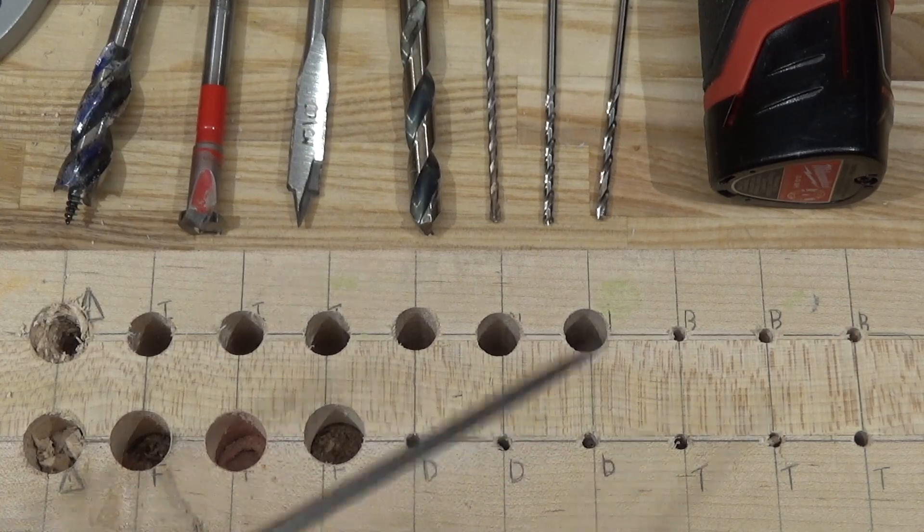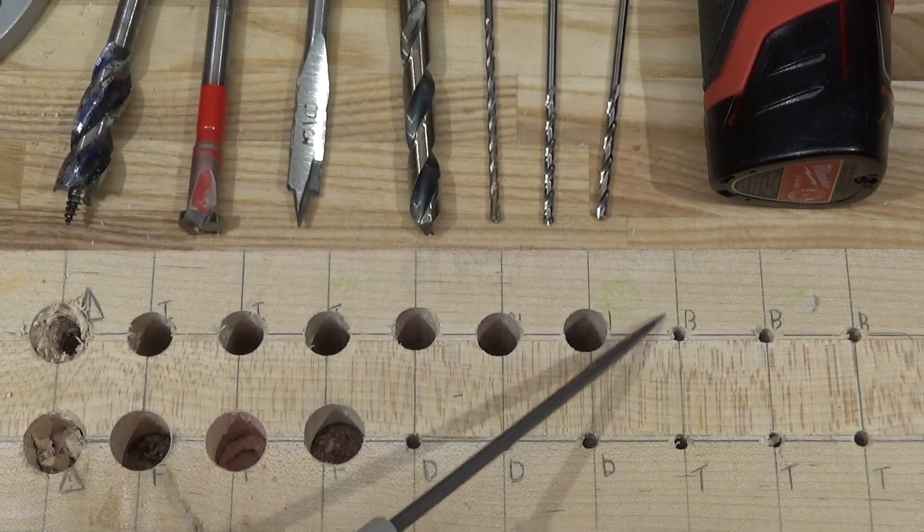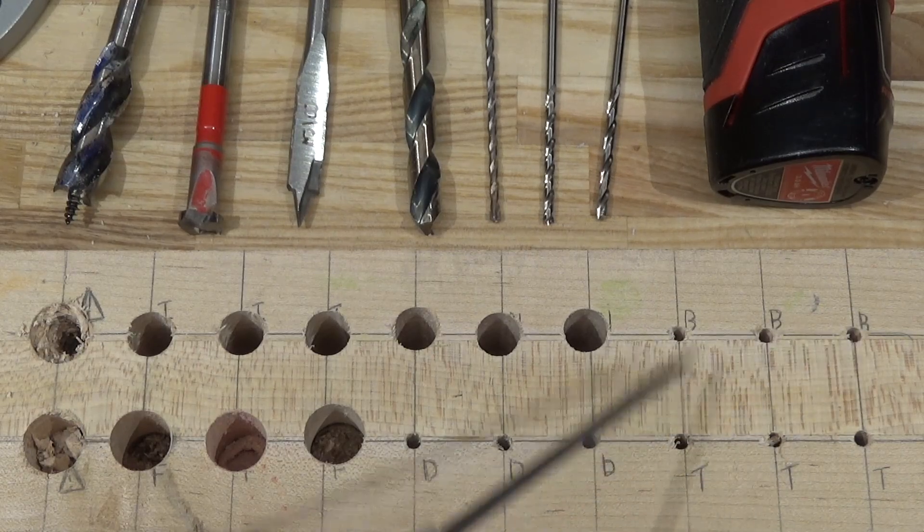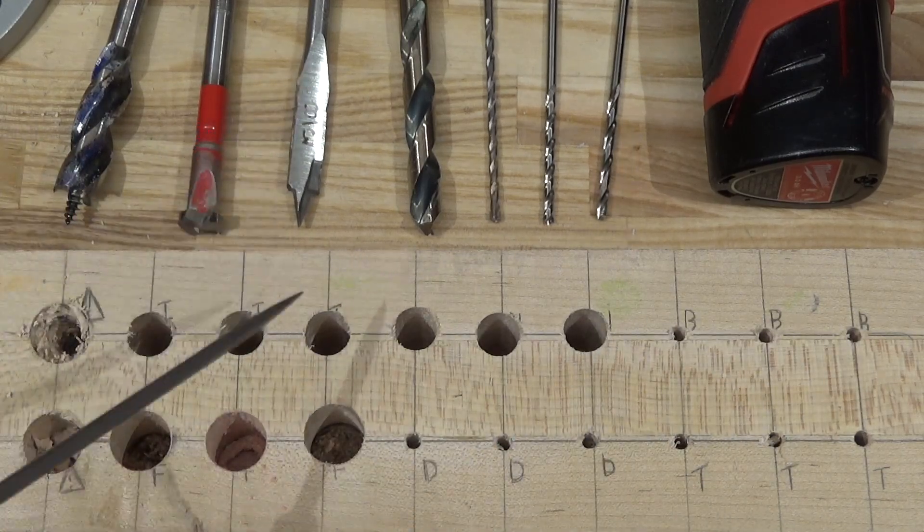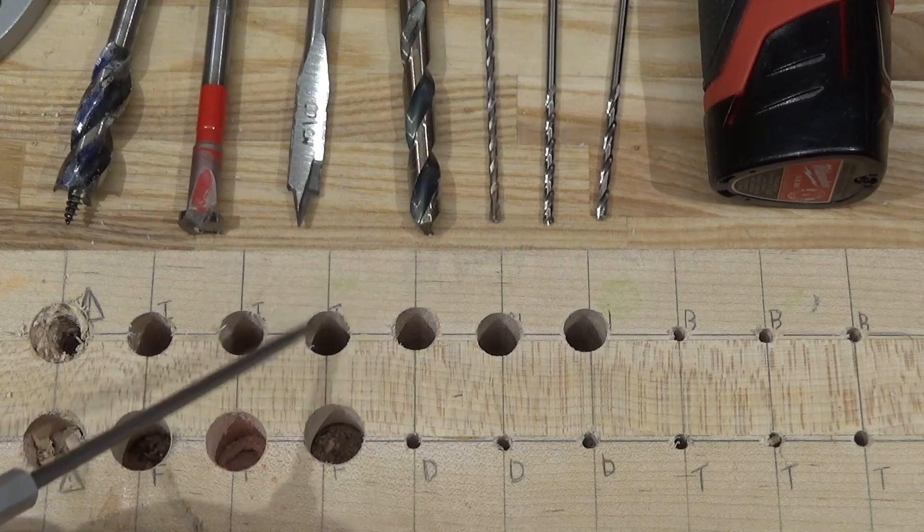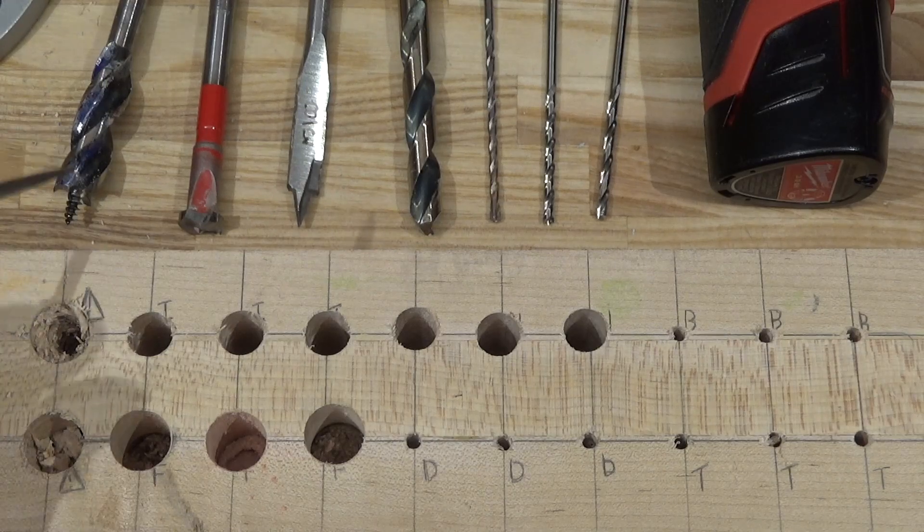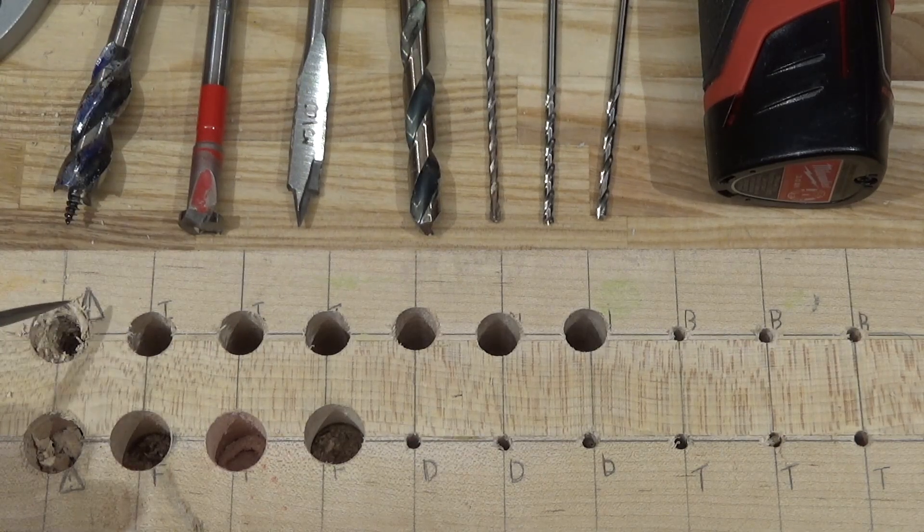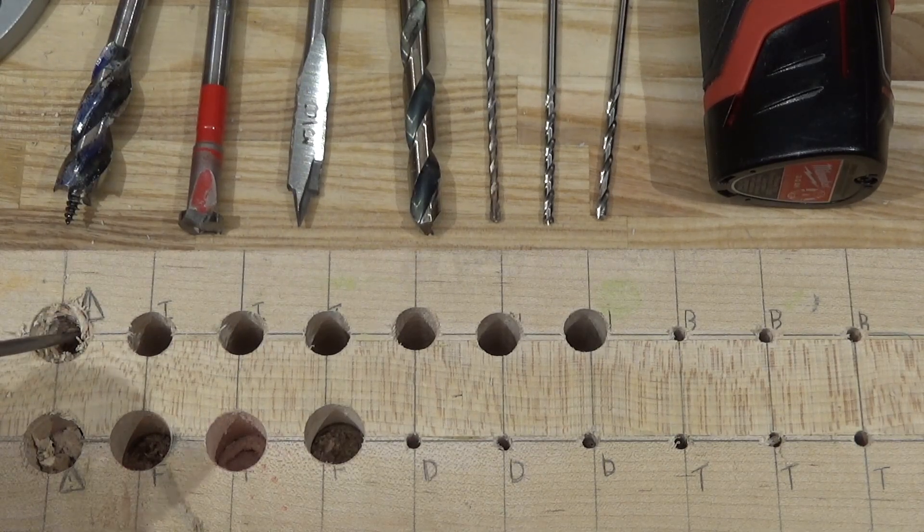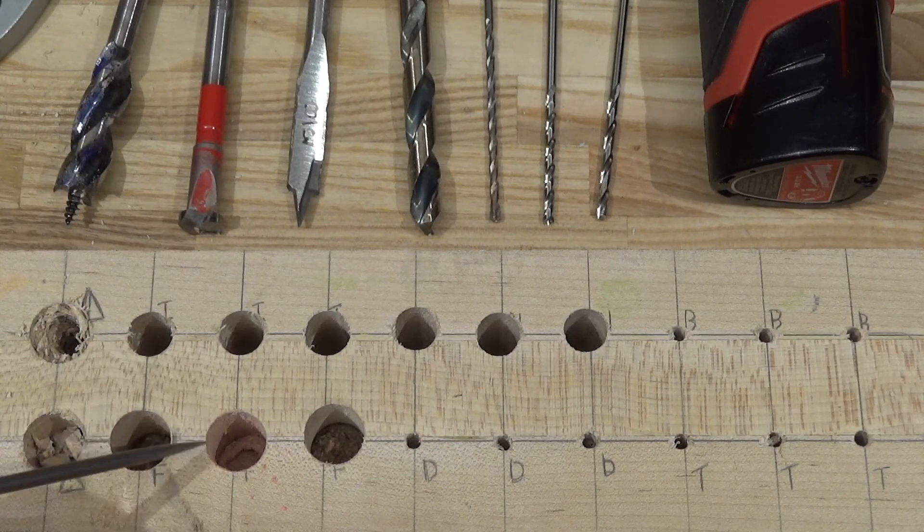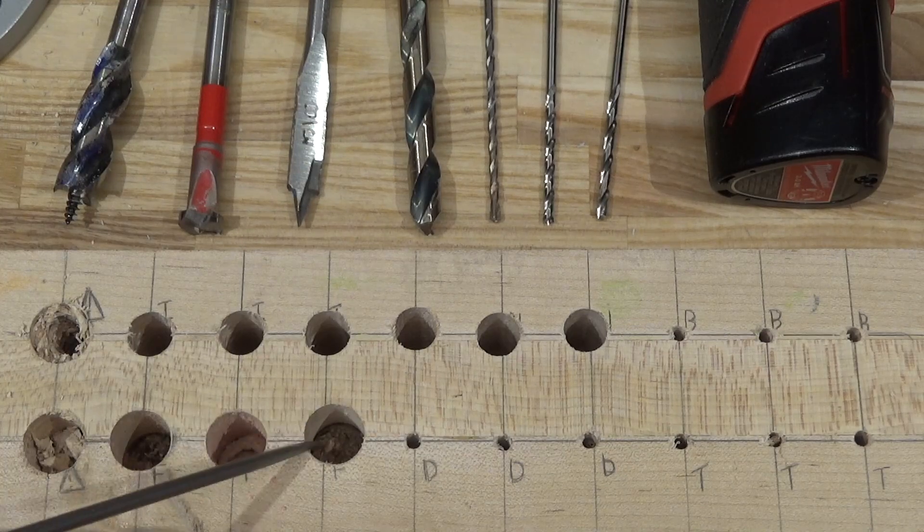Okay, here are the preliminary results, and they're about as expected. The brad points with the pointy ends, they hit the target really well and they're nice and centered. The spade bit as well, with the pointy end, it's very nice and centered. Even the auger bit with that screw tip, which is not very accurate, it still is not bad.